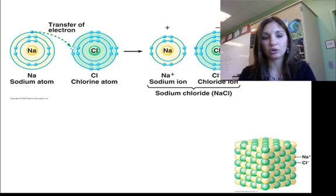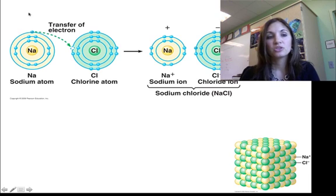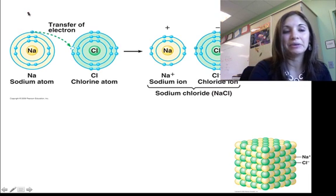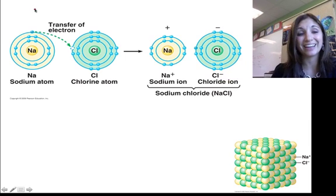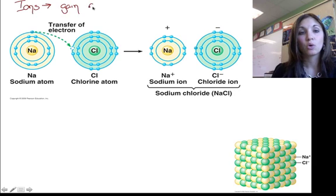Let's take a look at sodium and chlorine. Now, sodium and chlorine aren't exactly equally matched. Sodium and chlorine are going to form what we call ions. And ions form when we gain or lose electrons.